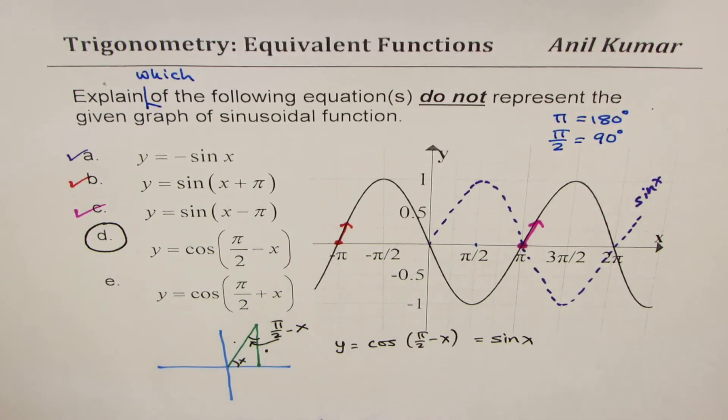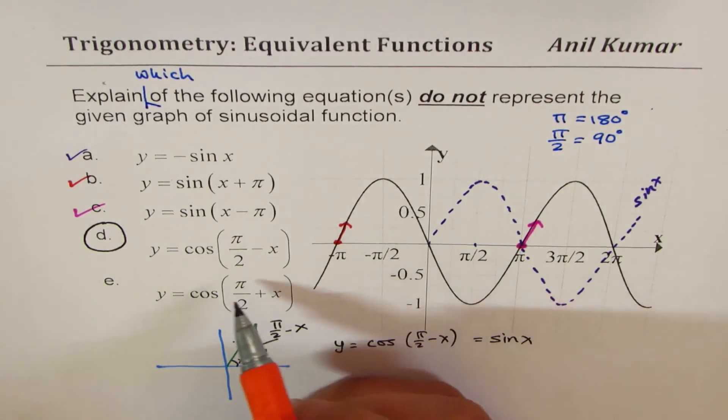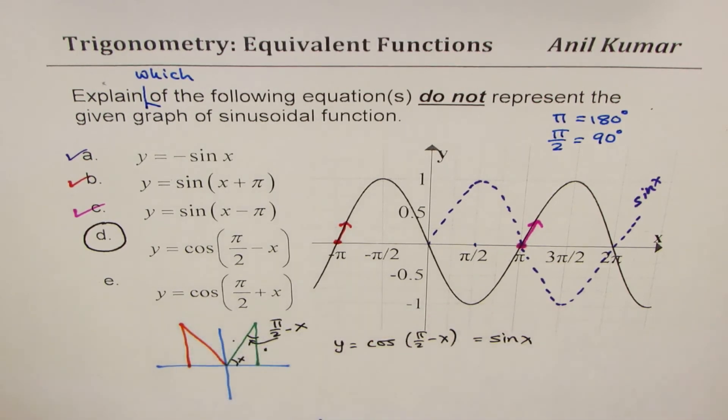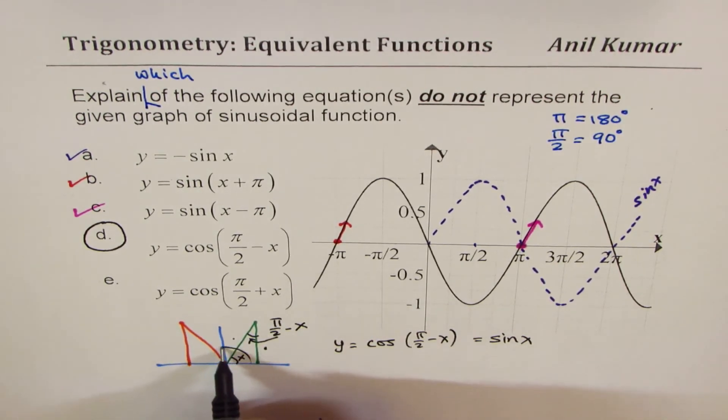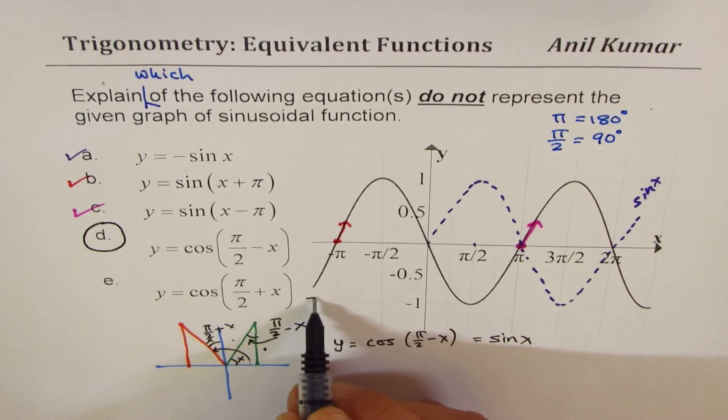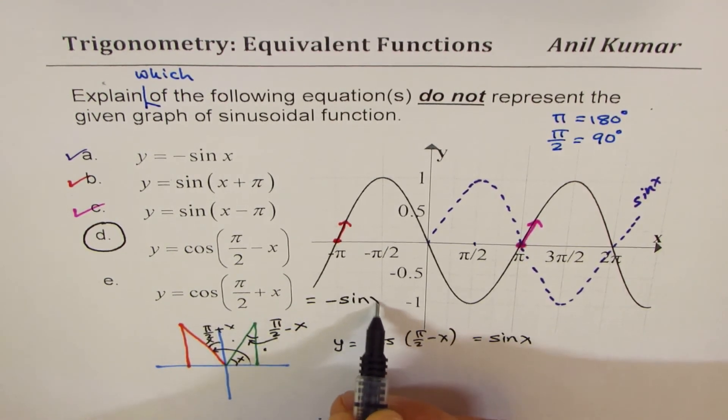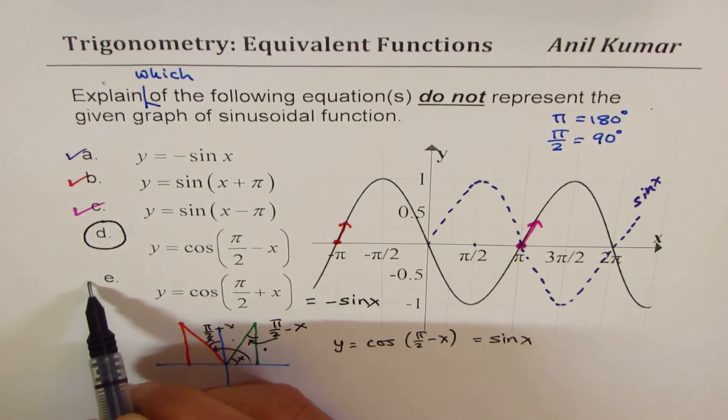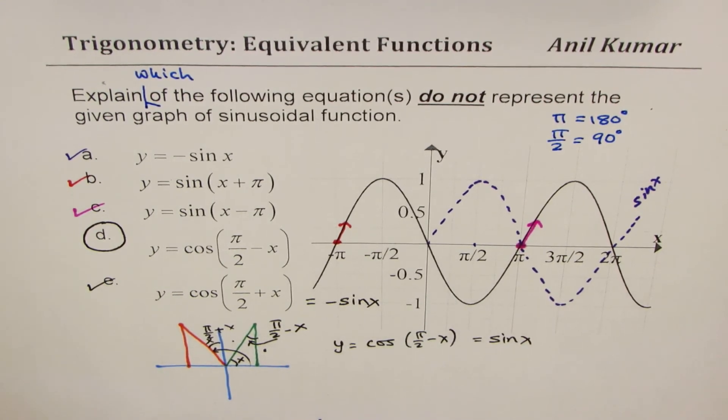If you look into the last one, so the last one for us is, let me sketch that also, pi by 2 plus x. So that would be in this quadrant, right, pi by 2 plus x. So now we're looking into the angle which is pi by 2 plus x, that means this side is x, okay, pi by 2 plus x. Now in this case, cos is negative here, so the last one is equal to minus sine x since cos is negative in quadrant 2, and therefore this also represents the given graph.